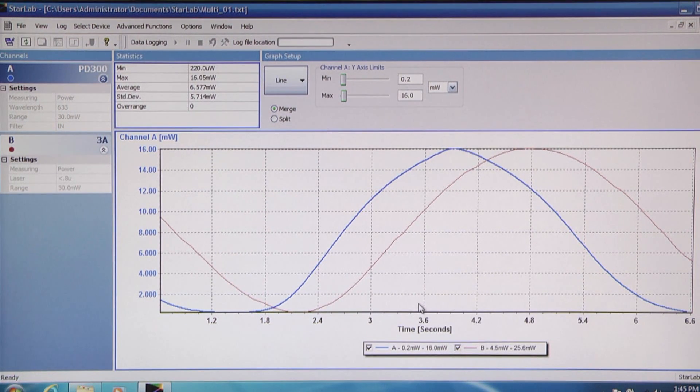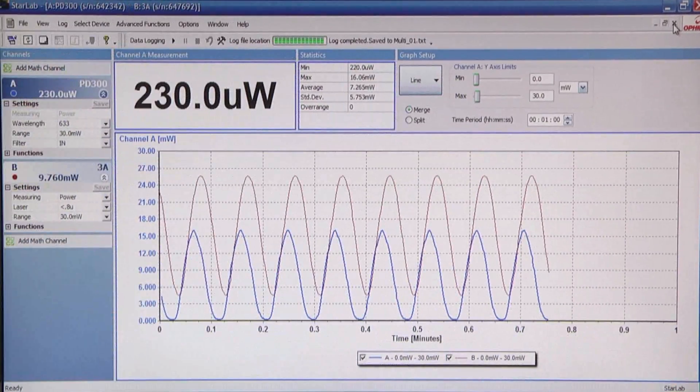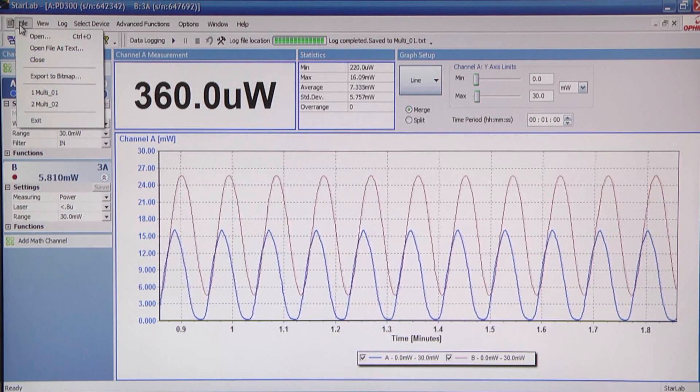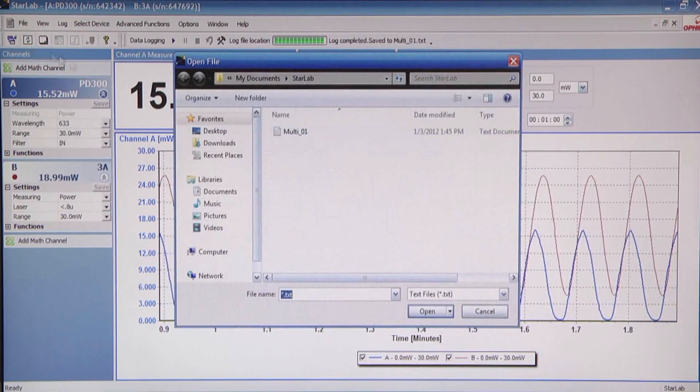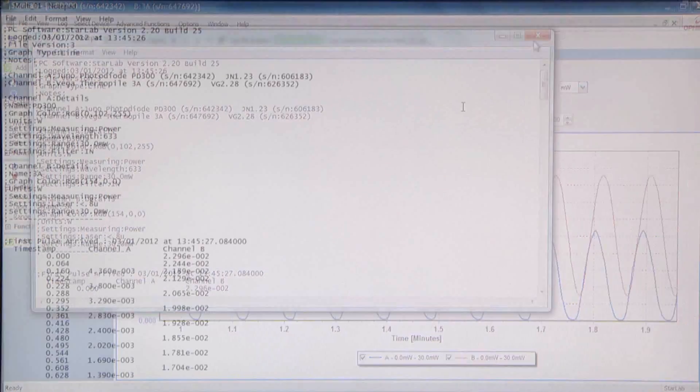Note that the graph is auto-scaled to fit the values shown. Let's close it. Here we can also click on file and choose open file as text to see the measured values as raw text. Here are the two data files.